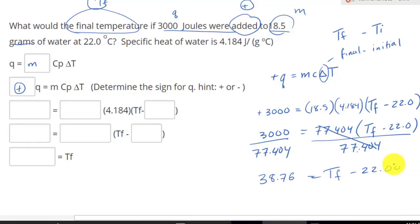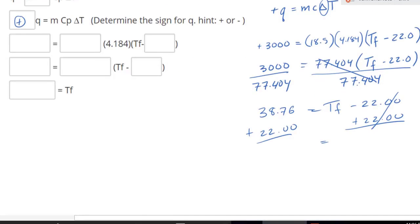Equal to Tf minus 22 degrees. So now, can we solve for Tf? Yes. We plus both sides by 22.0. That equals zero. And if we do to that side, we're going to do to this side as well. Plus 22.0. And what is our Tf going to equal to? And our Tf is equal to 60.76. And there you go.